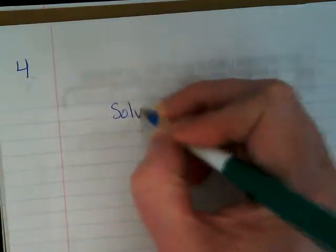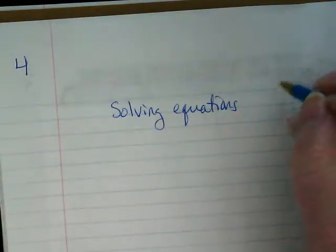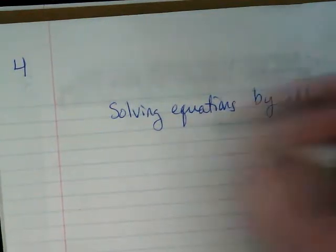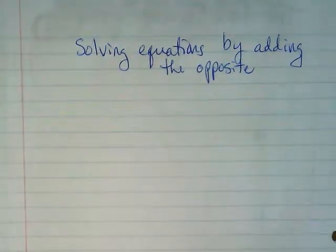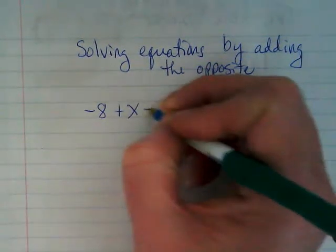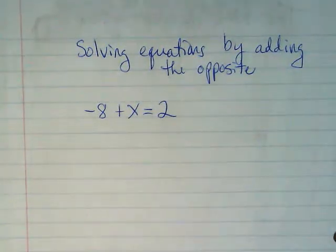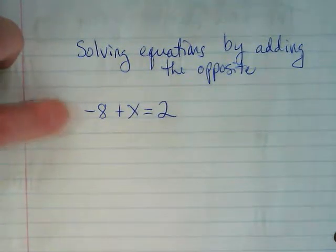Again, normally I would have you guys just use this for some practice problems, but today we're going to do what's called solving equations by adding the opposite. Your book separates these out from regular problems. I think they're pretty close to the same thing. If I have negative 8 plus x equals 2, what's different about this one? Instead of saying x minus 8, the negative 8 is out in front.